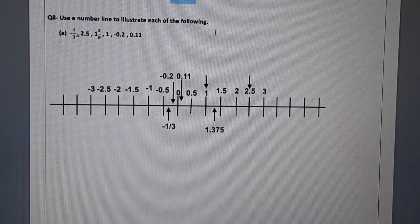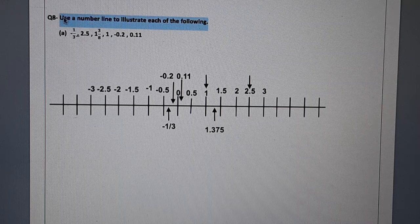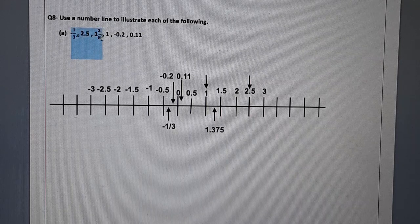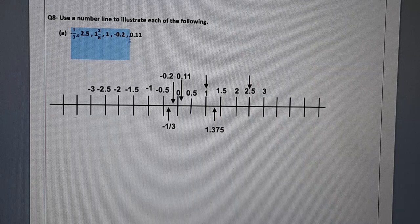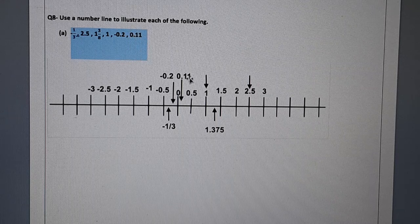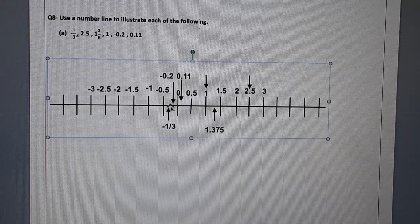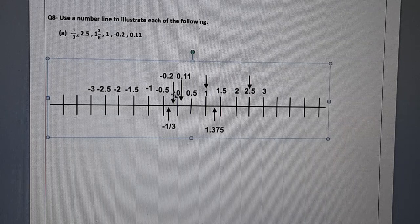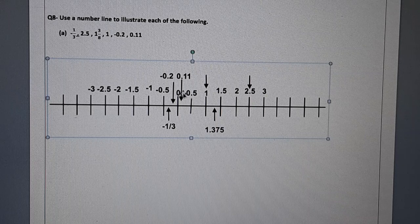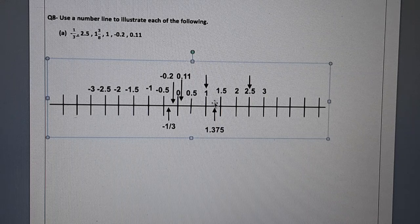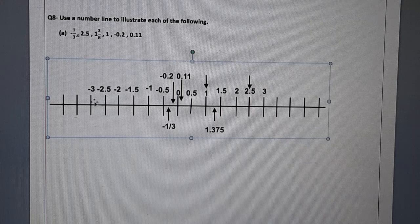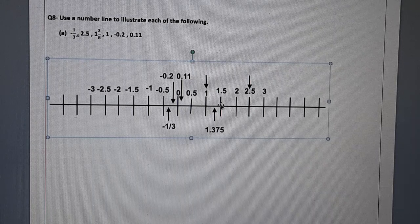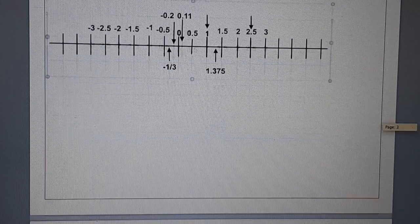Question number 8. We have to use a number line to illustrate each of the following: minus 1 over 3, 2.5, 1 whole 3 over 8, minus 0.2, and minus 0.11. So this is the number line and the arrows indicate the required numbers. This is minus 1 by 3. Then you have got minus 0.2 over here. Then we have got 0.11 over here. Then we have got 1. Then 1.375 and then 2.5. Now in this number line, we have used 0.5 intervals: 0.0, 0.5, 1, 1.5, 2, 2.5 on both sides.